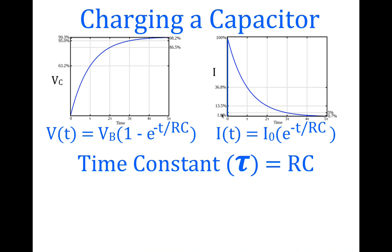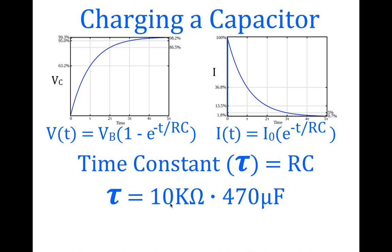For example, if we have a 10 kΩ resistor and a 470 μF capacitor, then the time constant for this pair is 4.7 seconds. Looking at our graph: one time constant is 4.7 seconds at 63.2%; two time constants is 9.4 seconds; three time constants — about 14.1 seconds — the capacitor will be 95% charged. After two time constants at 9.4 seconds, the current through the circuit will be 13.5% of the initial maximum. That's specific to this resistor-capacitor pair.